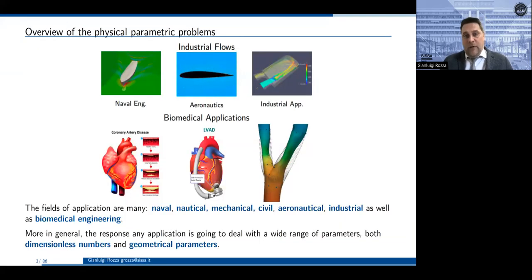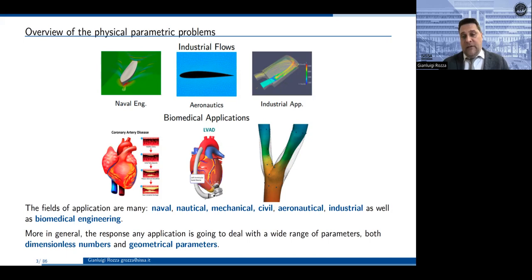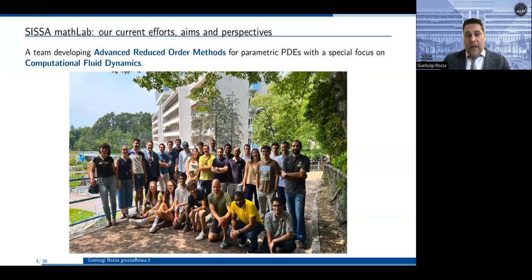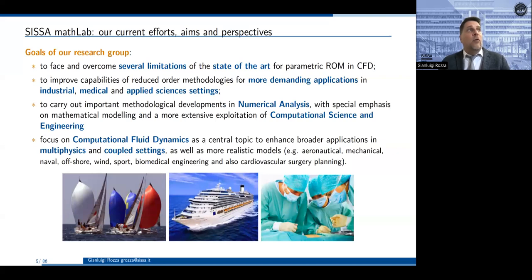What we propose is to create a computational collaboration — rather than competition — between the state of the art of classical discretization techniques, high performance computing, and reduced order methods. Here you have an overview of different problems characterized by different flow regimes, geometries, and applications in industry and biomedicine. Parameters could be geometrical quantities like shape, or dimensionless numbers like the Reynolds number in fluid mechanics. We have parametric problems. My group at SISSA is mostly numerical analysis, making methodological developments to overcome many limitations of reduced order modeling in real-world problems.